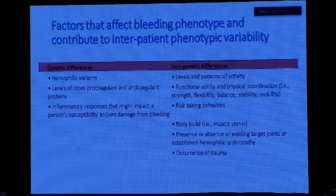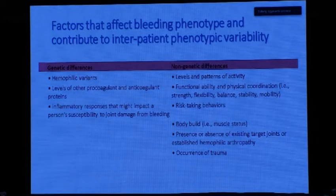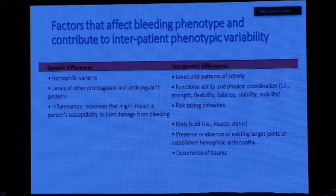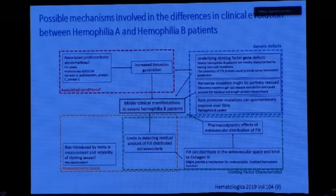What other factors affect the phenotype and genotype differences between Hemophilia A and B? These include: the hemophilic variant, levels of procoagulant and anticoagulant factors, inflammatory responses that impact susceptibility to joint damage, and non-genetic factors such as level and pattern of physical activity, body weight, and the occurrence of trauma — which may be the most important differentiator.